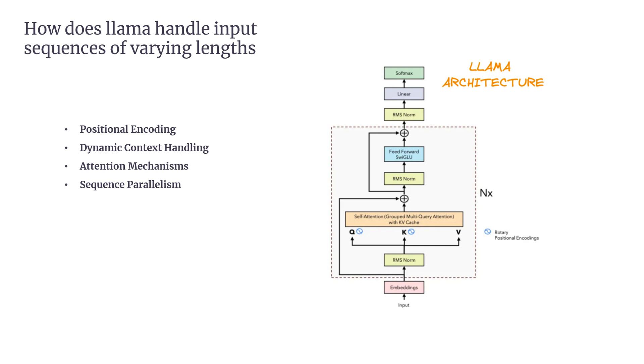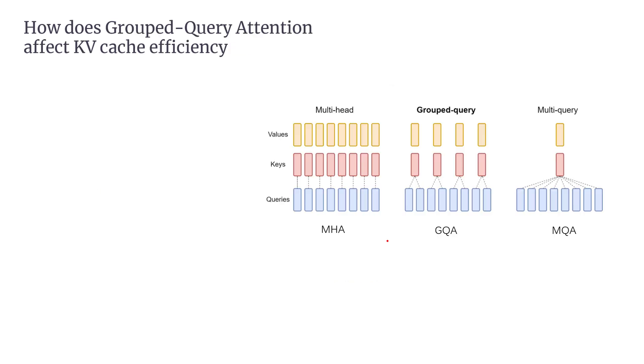Now let's take a look at Grouped Query Attention (GQA) and its impact on KV cache efficiency in LLAMA models. This technique is a powerful optimization that reduces memory usage while maintaining model performance. Here's how it works.